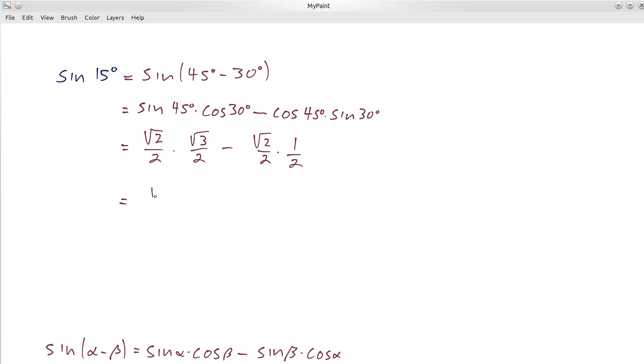We could simplify this a little if you like. This becomes the square root of 6 divided by 4 minus the square root of 2 divided by 4. So we could simplify that to be the square root of 6 minus the square root of 2, can't do anything more with that, all divided by 4. And there's your answer.